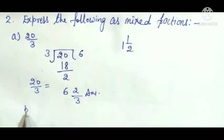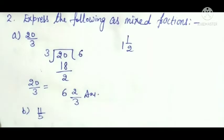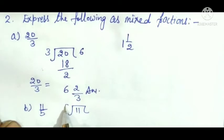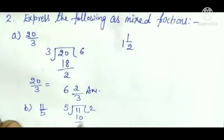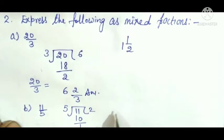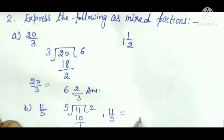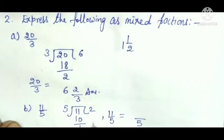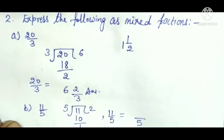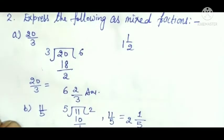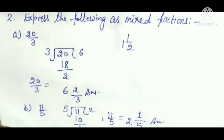The next part is 11/5. We divide 11 by 5: 5 twos are 10, remainder is 1. So 11/5 as a mixed fraction is written with denominator 5, remainder 1, and quotient 2 — giving us 2 and 1/5.